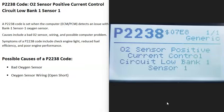Today I'm talking about a P223A code, what it is, and how you go about fixing it. A P223A code is an O2 sensor positive current control circuit low bank one sensor one.